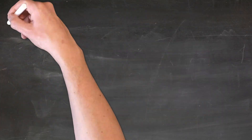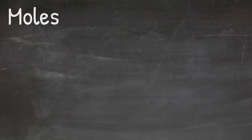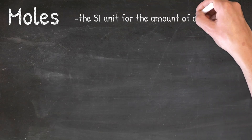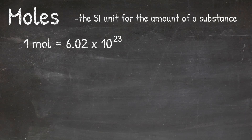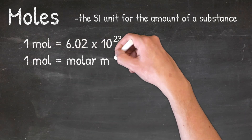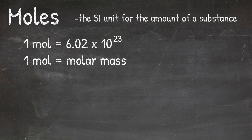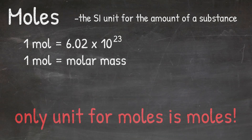The final variable that is important when looking at gas laws is moles. Remember that moles is the SI unit for the amount of a substance. One mole is equal to Avogadro's number, which is 6.02 times 10 to the 23rd, and one mole is also equal to the molar mass of the substance. If you need a refresher on moles, make sure to check out our video. The only unit we have for moles is moles, so unlike the other variables, moles only has one unit. This is important because it will help you identify the correct numbers to plug into the right variable when solving each equation.